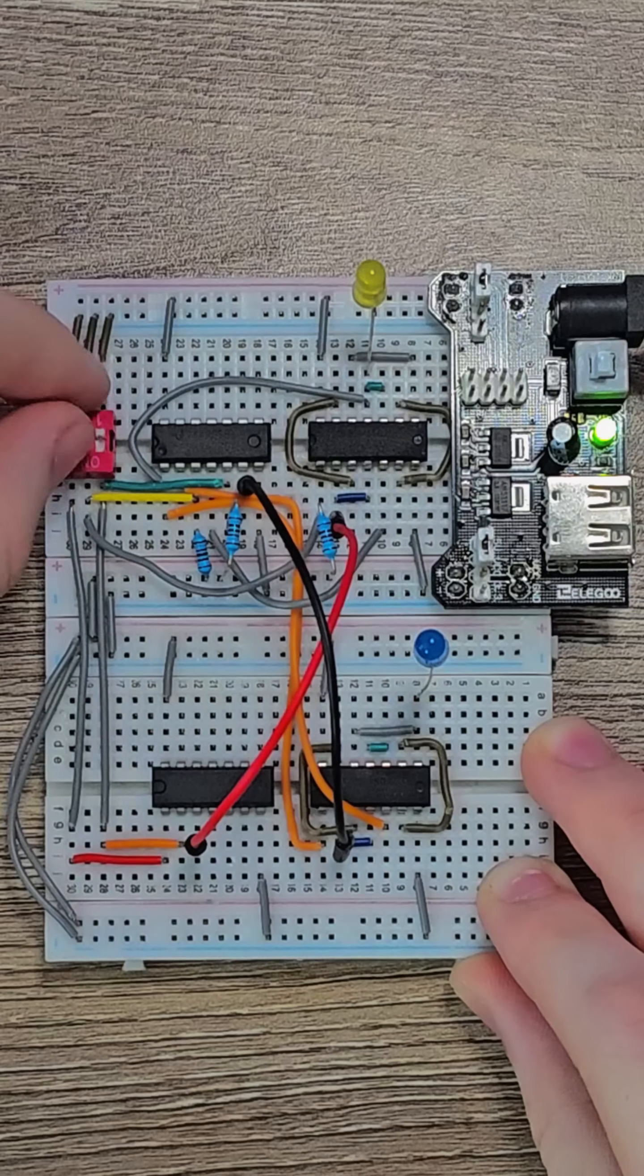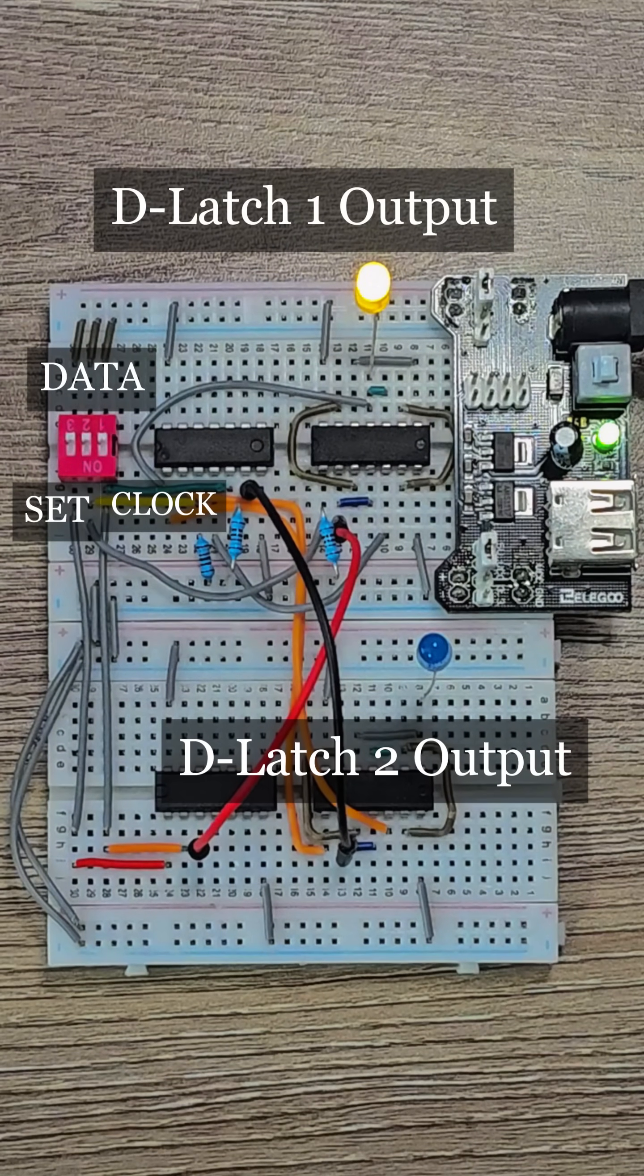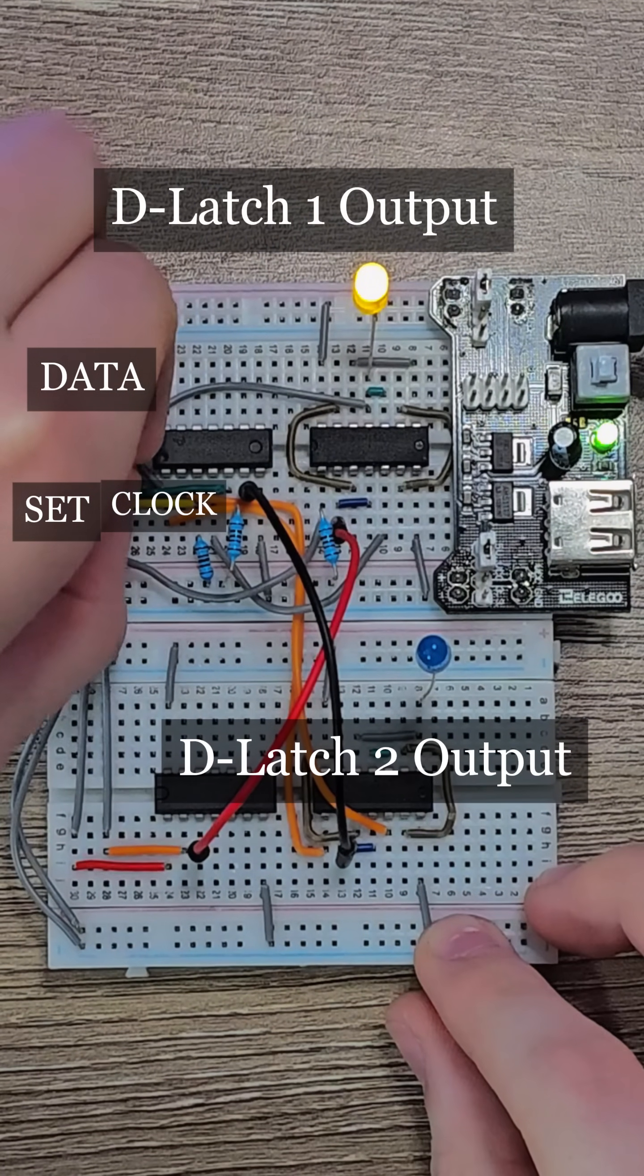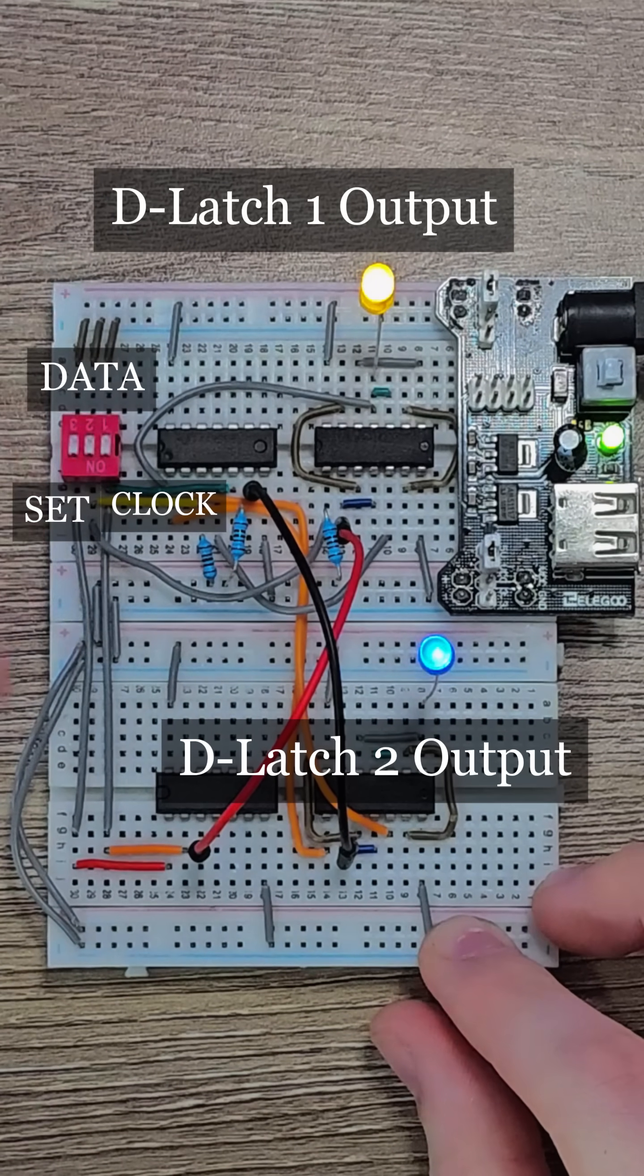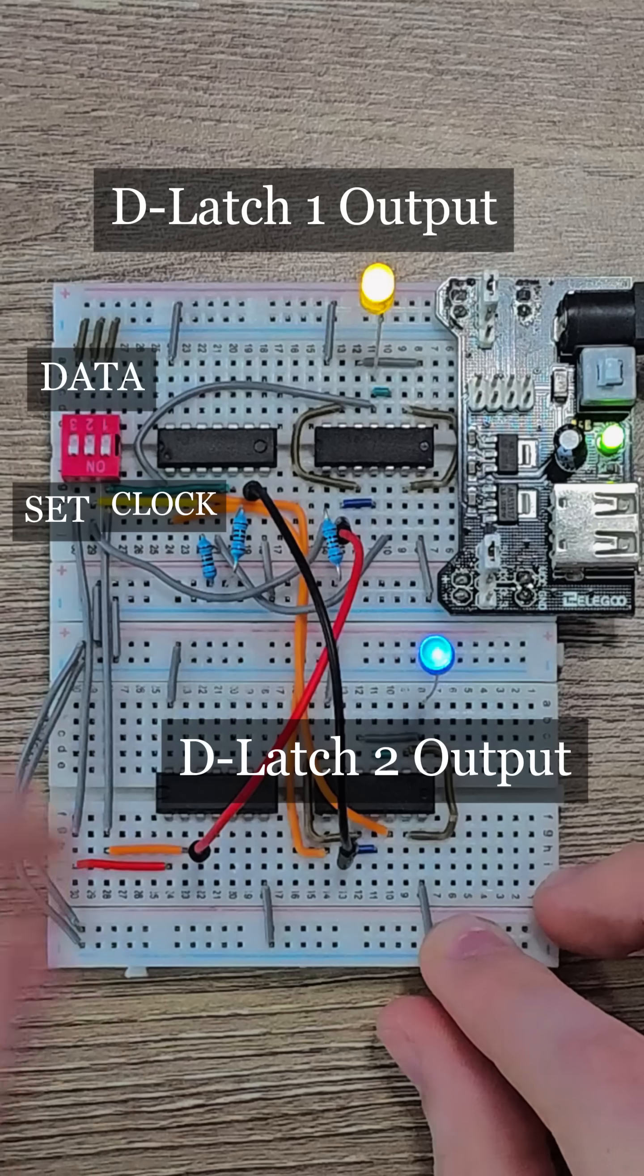Now let me explain why this is better. With just having one D-latch, it could work for different types of computers, but it will not work for mine. My computer will have an internal clock. With the clock, I must be able to store and read data while being connected to the clock.